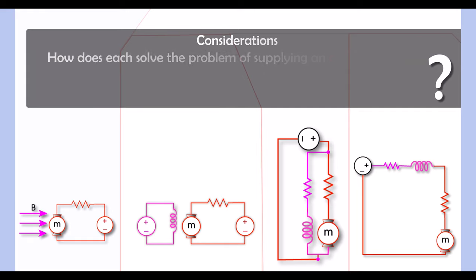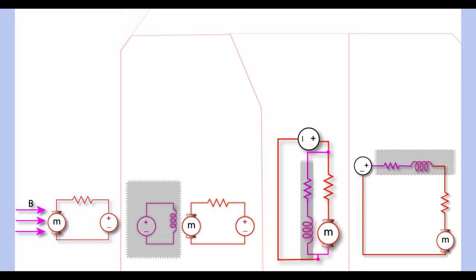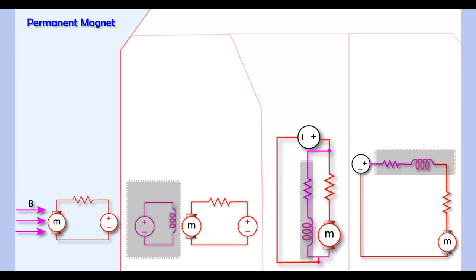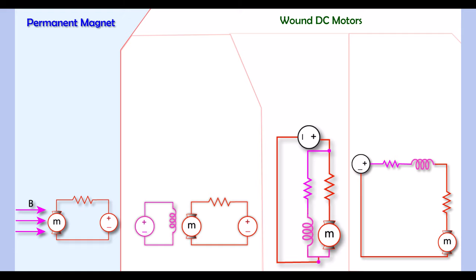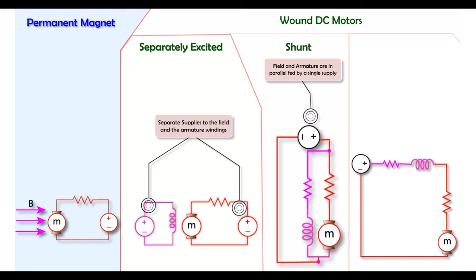The first one we'll discuss is the permanent magnet DC motor, with its use of permanent magnets to generate the field. Then we have the wound DC motors, which use a winding to generate a field. The first of these is the separately excited DC motor, with two separate circuits — one for the field and one for the armature. The shunt DC motor has the field and armature in parallel, requiring just a single source. Finally, the series motor places the field and armature in series, and that brings about some interesting behavior we'll discuss later.